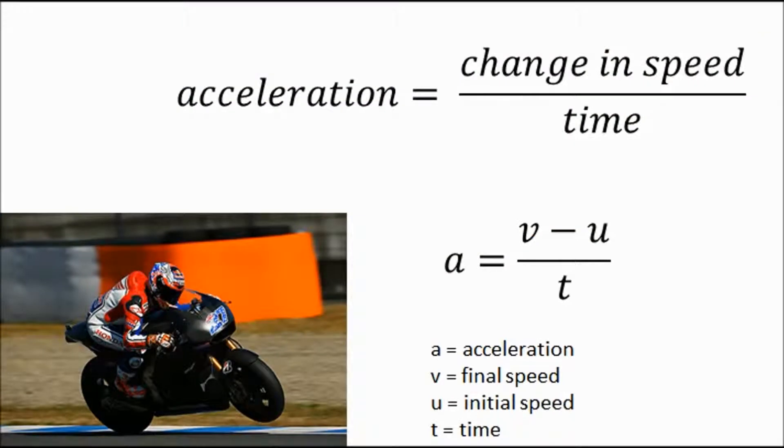So now there are two equations that you might use for acceleration. Now the first is change in speed over time. Now you can write this using symbols as well. So A equals V minus U over T. A is acceleration, V is your final speed, U is your initial speed, and T is your time.